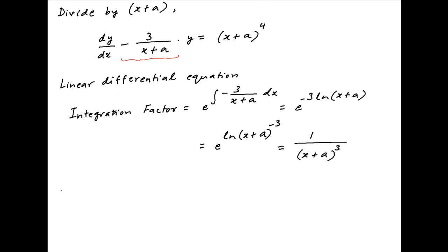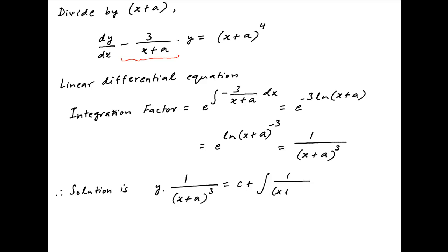Therefore the solution of the differential equation is given by y times the integrating factor, which is 1 upon (x + a) raised to the power 3, is equal to the constant of integration plus the integral of the integrating factor 1 upon (x + a) raised to the power 3, times the expression on the right-hand side (x + a) raised to the power 4 dx. The right-hand side simplifies and is equal to c plus half of (x + a) squared.